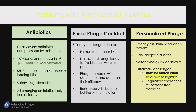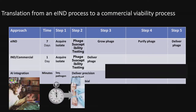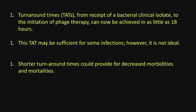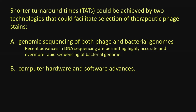The real problem we have is the time to match. Right now it takes us about 18 hours at best, and very often even longer than that. So the question is: could we do that quicker? That's why I got interested in decreasing the turnaround time. There are two technologies that could help: genomic sequencing of both the phage and bacterial genomes — which can now be done very quickly, and some hospitals are already doing it for antibiotic sensitivity — and advancing computer hardware.